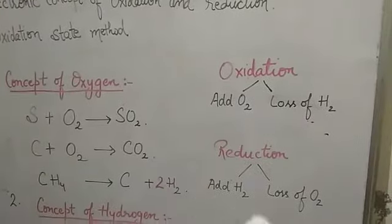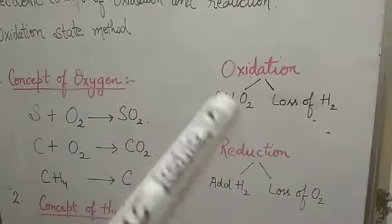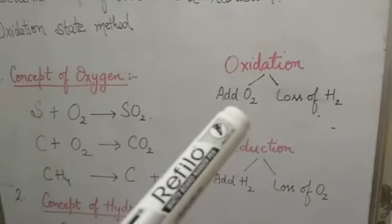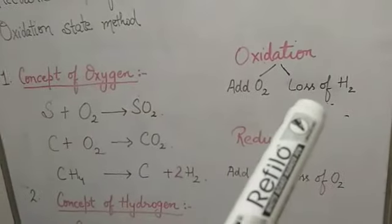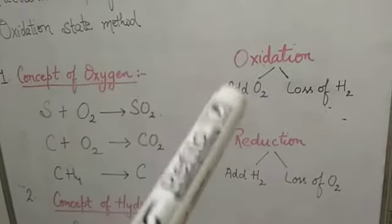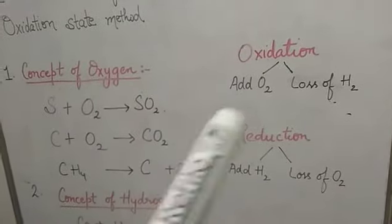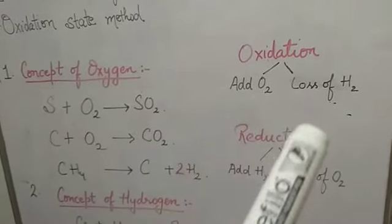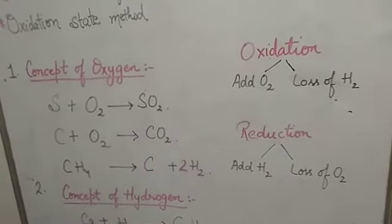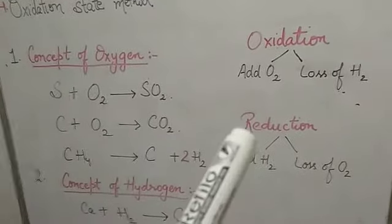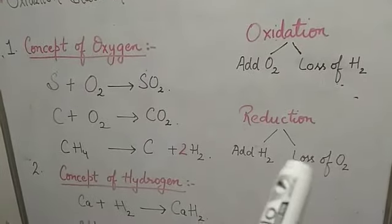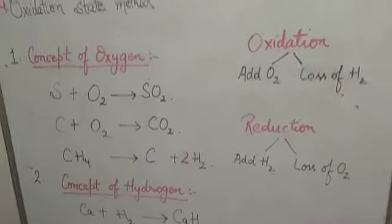In an oxidation reaction, there is an addition of oxygen, or loss of hydrogen occurs. So if there is an addition of oxygen or removal of hydrogen, that is oxidation. In a reduction reaction, there is an addition of hydrogen and/or loss of oxygen takes place.